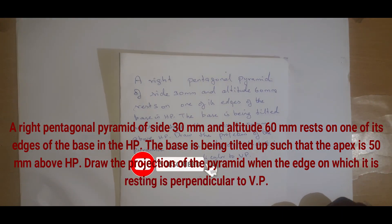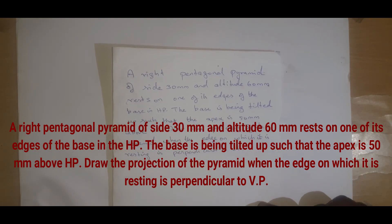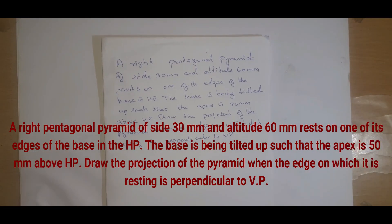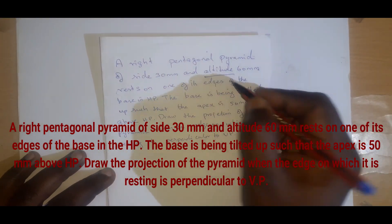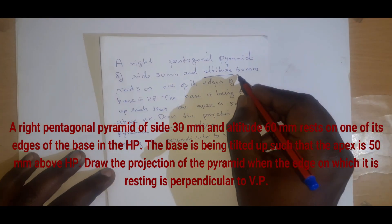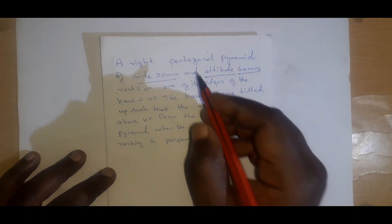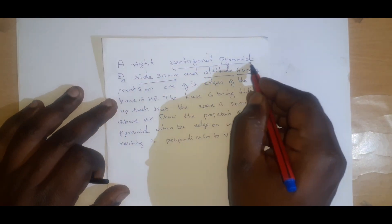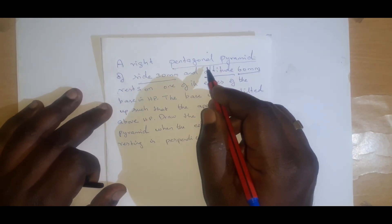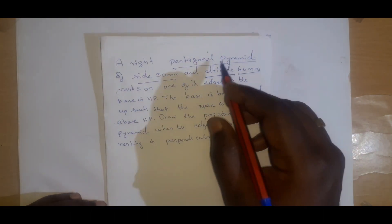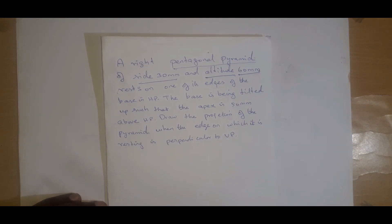Hello friends. In this video we are going to see a pentagonal pyramid solid problem — projection of solids. Here we can see the question: a right pentagonal pyramid of side 30 mm and altitude — altitude means the height — the height is 60 mm. So the dimensions given are 30 mm base and height is 60 mm. Pentagon means it has five sides and pyramid means it has one base and one top apex point.